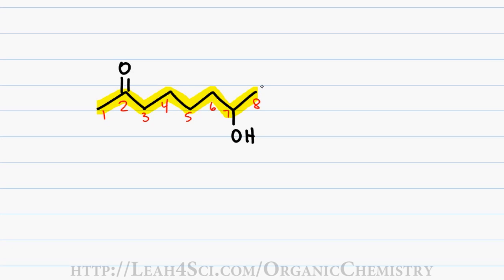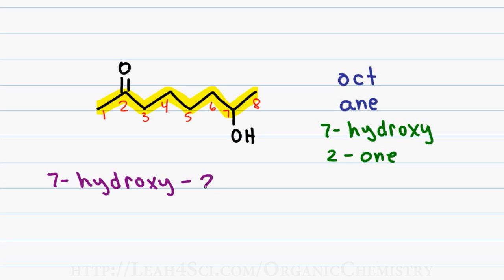Numbering from the side of the ketone, I have a total of 8 carbons in my ring giving me a first name of oct. Having only single bonds gives me a last name of ane. Since the alcohol is a substituent, I get the prefix 7-hydroxy and the ketone my functional group giving me a suffix of 2-one. This gives me a final name of 7-hydroxy-2-octanone.